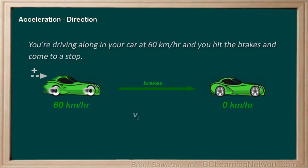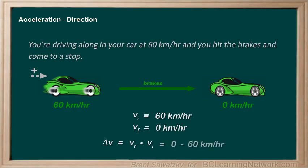But, you're slowing down. Therefore, your final velocity is smaller than your initial velocity. You went from 60 km/hr to 0. Your delta V, therefore, would be Vf minus Vi, negative 60 km/hr in this case. Therefore, your acceleration is negative.